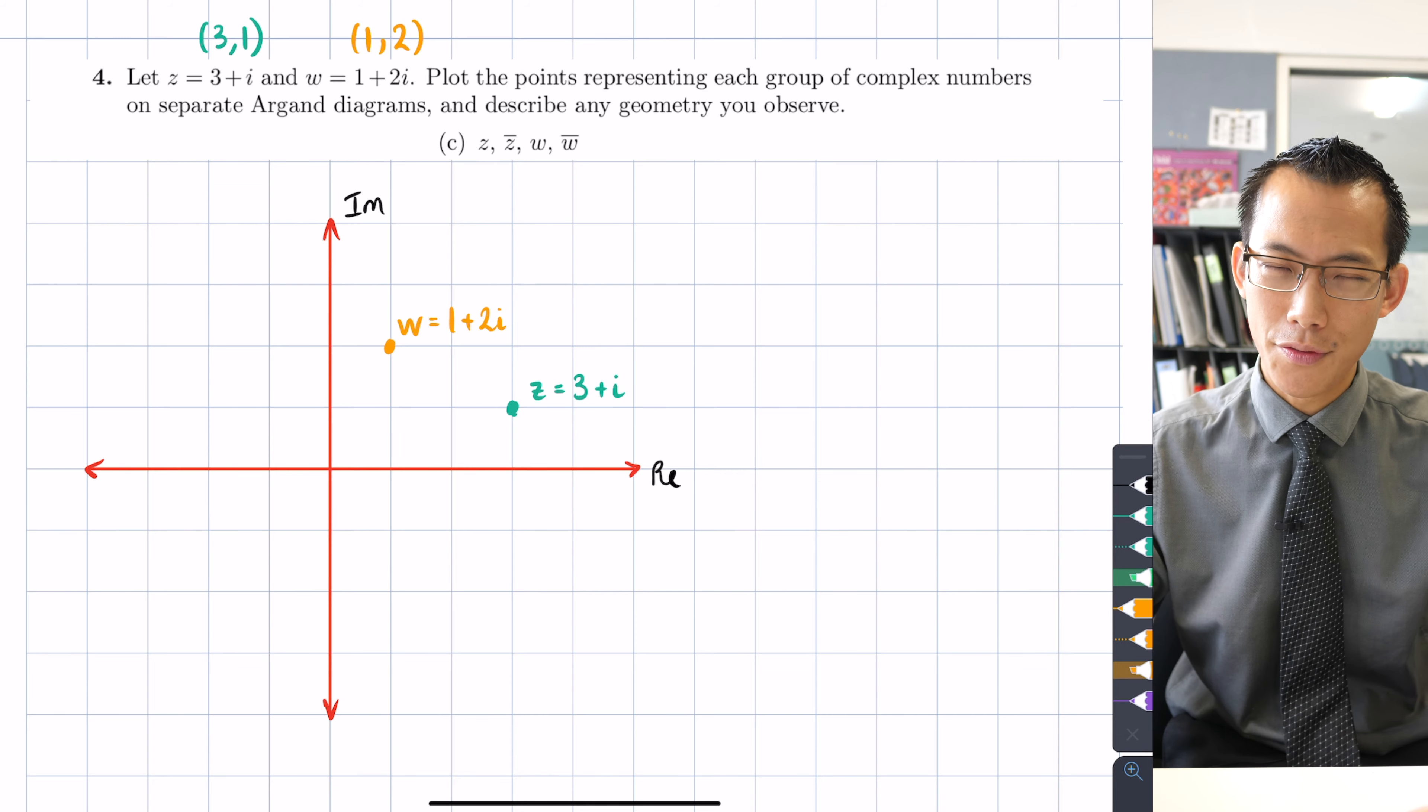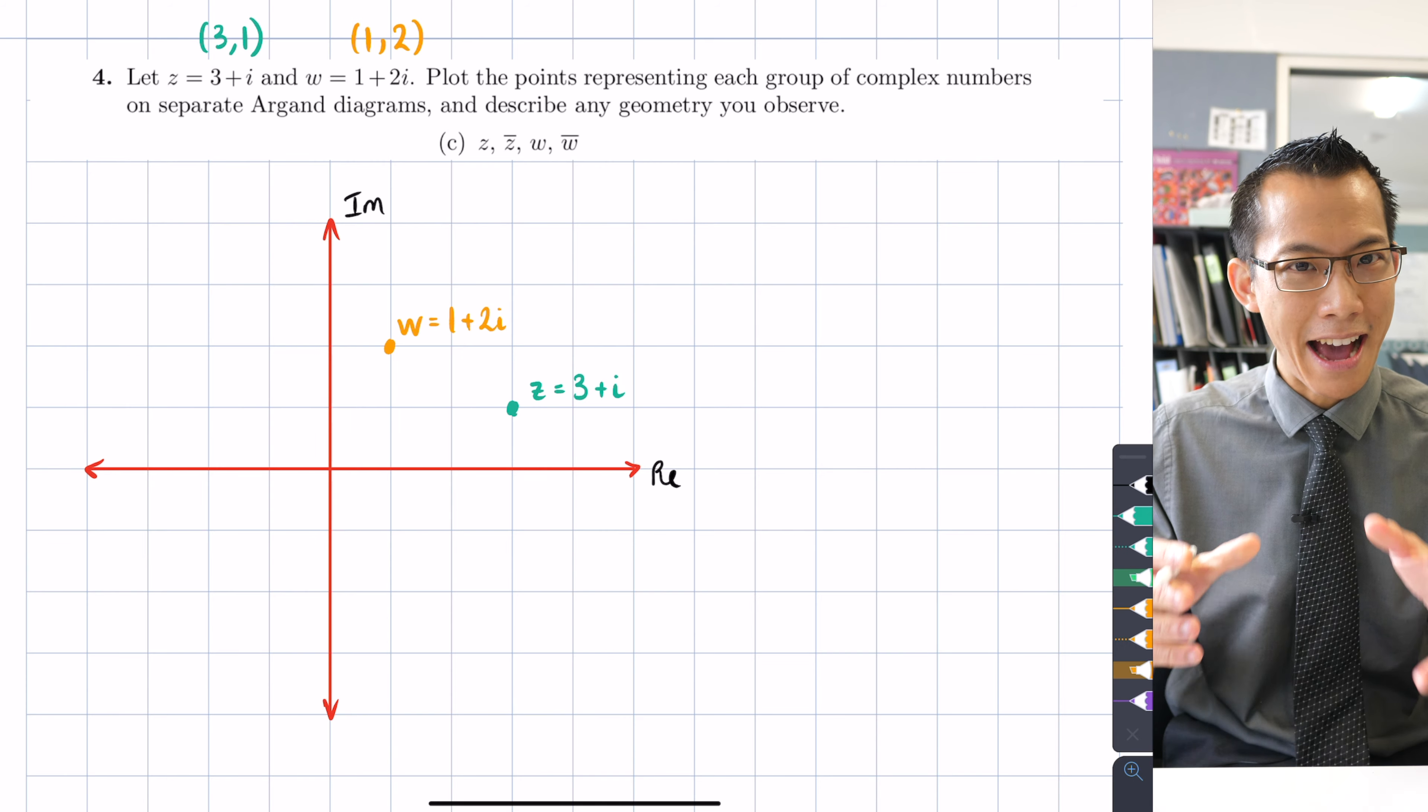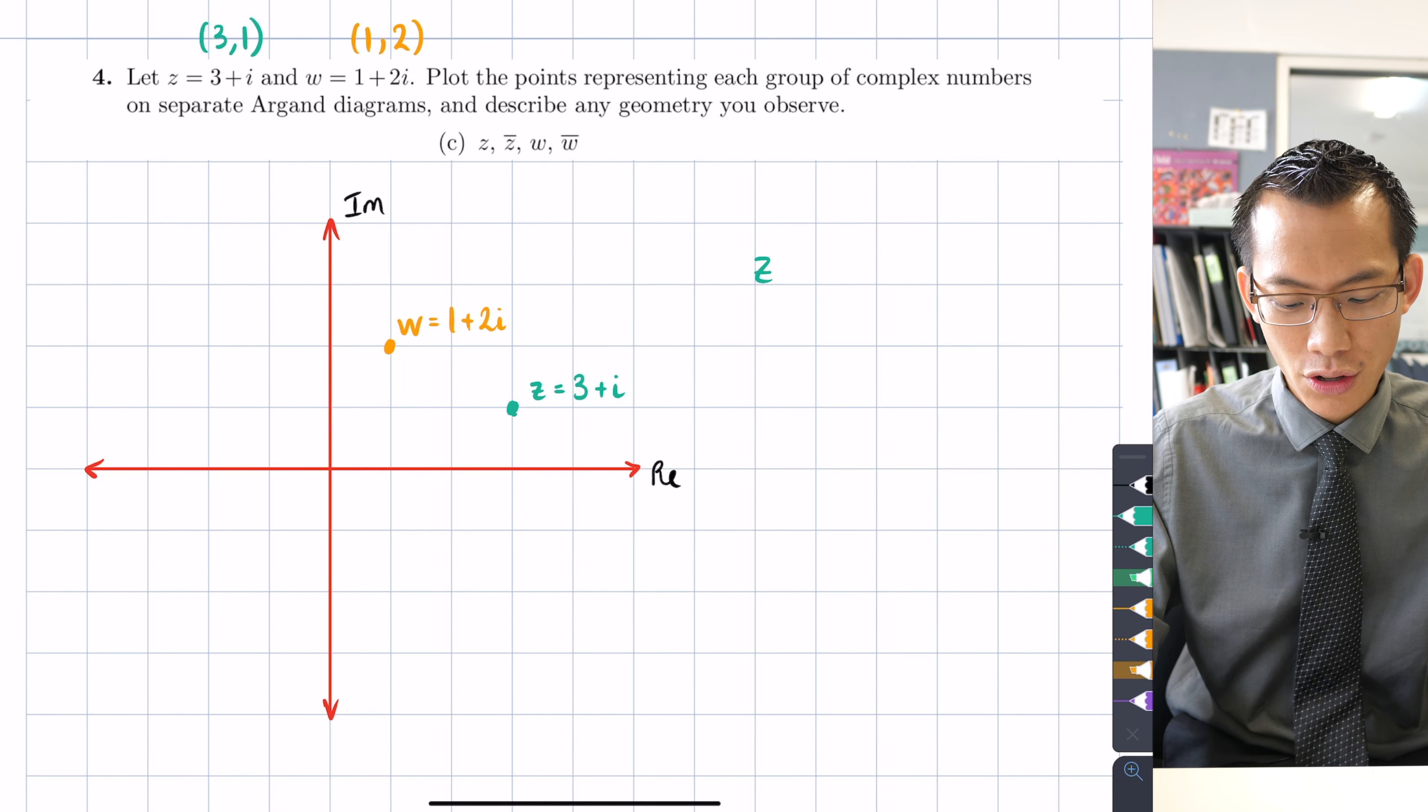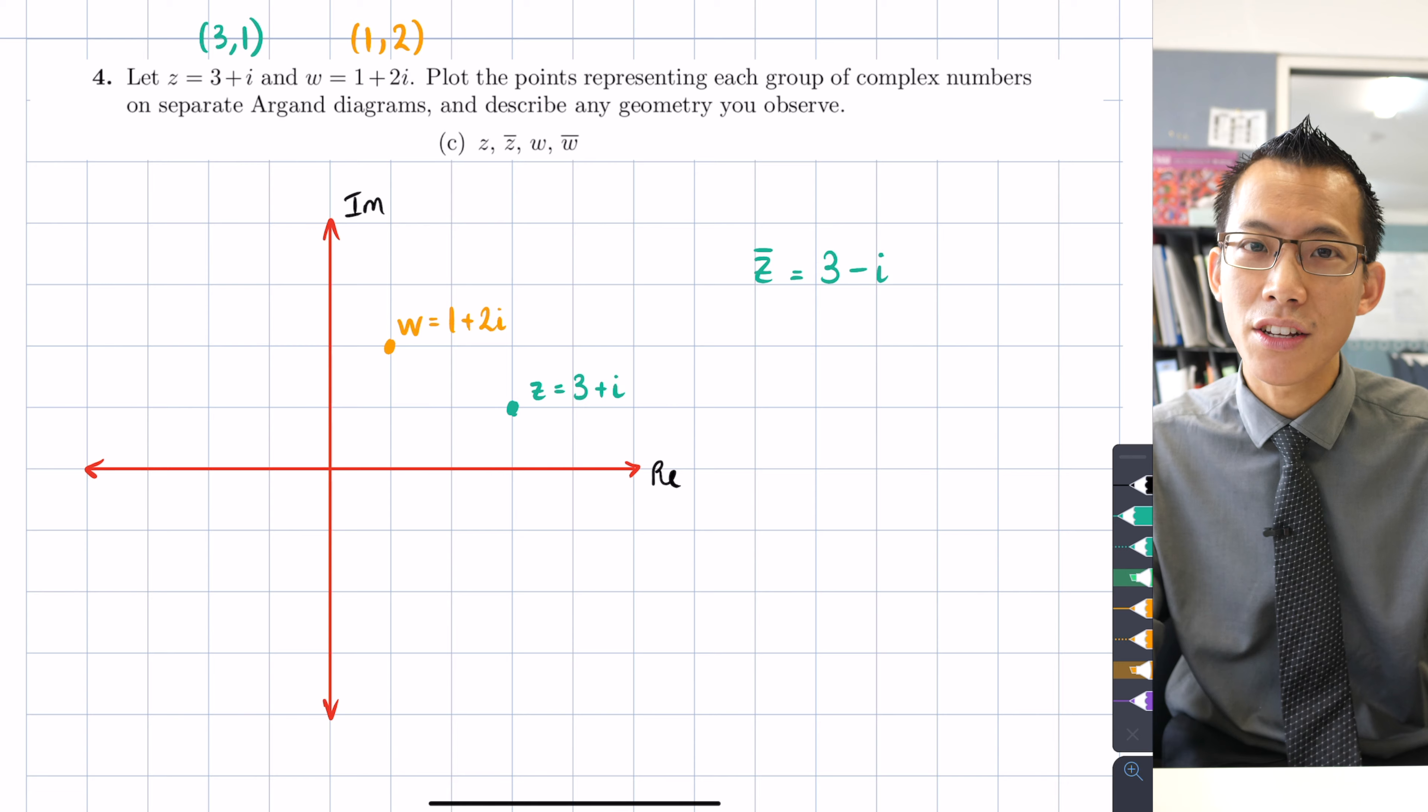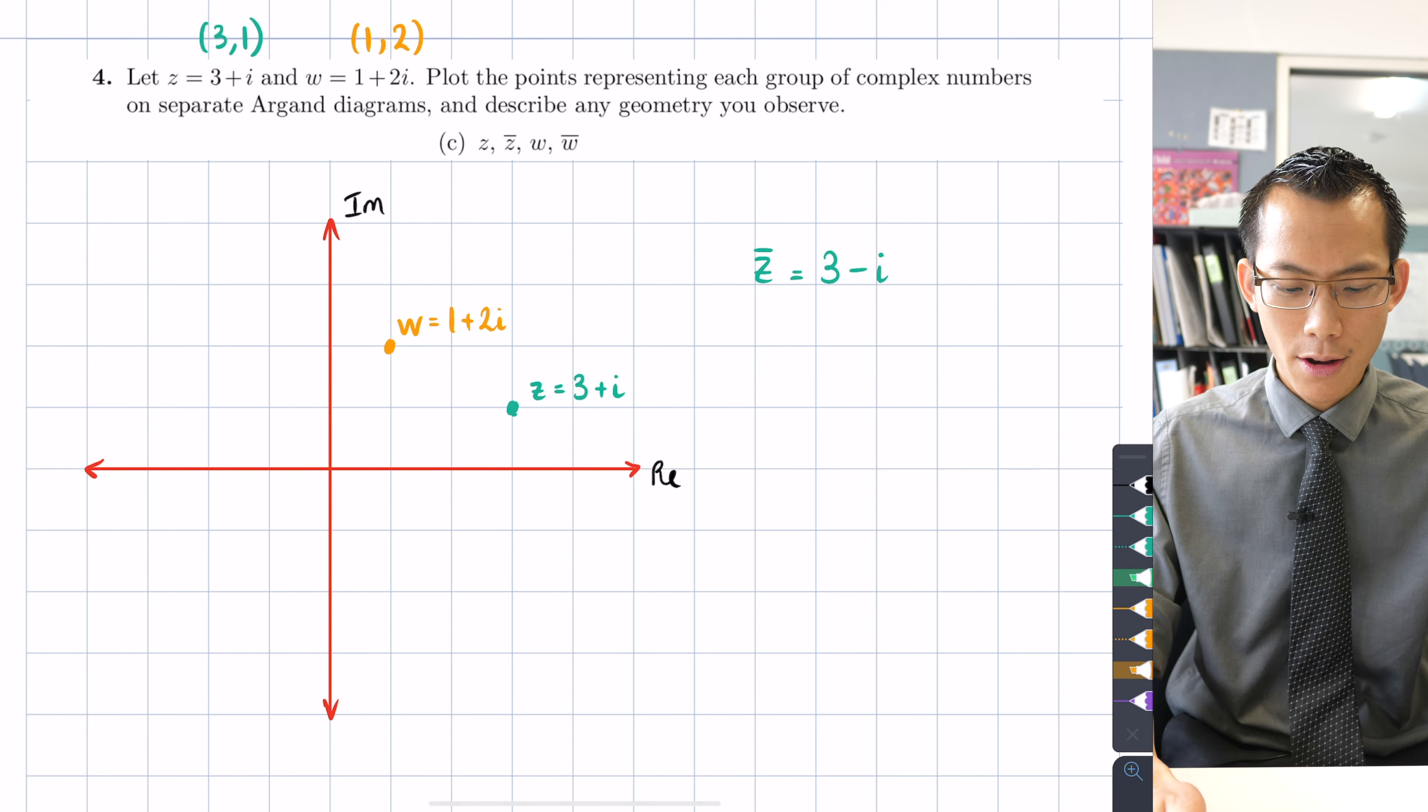Now in this particular part of this question it asks us to focus on the conjugates, z̄ and w̄. Before I reach for the actual point where they belong I want to make sure I understand what is the conjugate. For z being 3 + i its conjugate will be the same real part but the opposite imaginary part, 3 - i. So where is that going to live? It's gonna share the same horizontal coordinate so it's going to be in line with wherever we plotted z but it's going to be minus i. It's going to be down here.